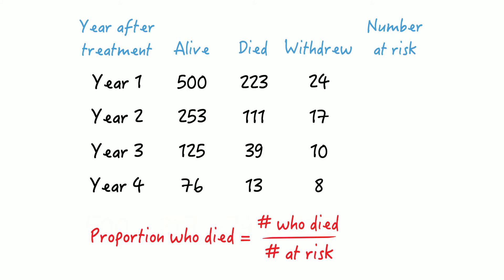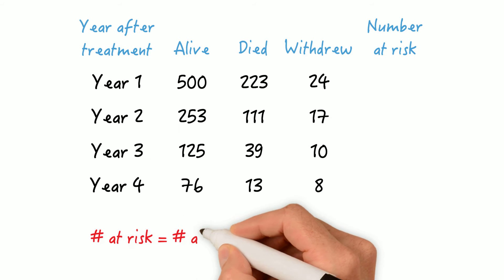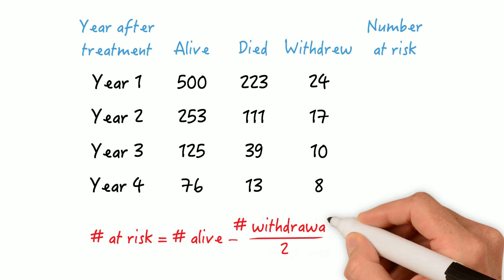Well, in this situation, we make an assumption. We assume that all people who left did so uniformly throughout the year, and if they left uniformly, 12 left in the first half of the year and 12 left in the second half. So on average, half of these 24 were at risk throughout the year. The number at risk is the number alive at the beginning of that year minus half of the withdrawals.